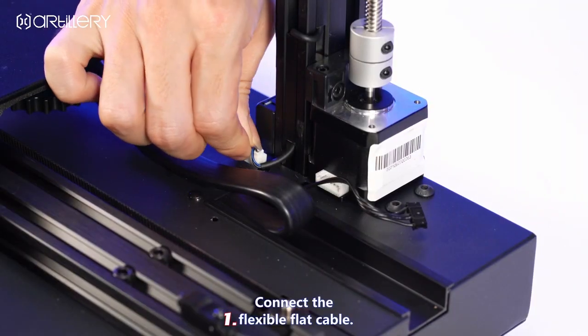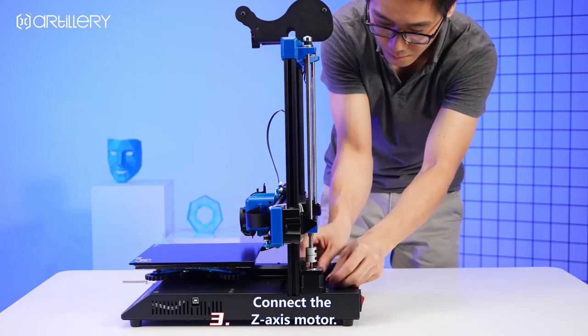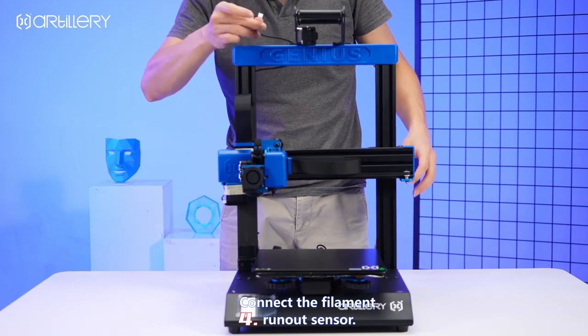Connect the flexible flat cable. Connect to the Z-axis motor. Connect to the filament run-out sensor.